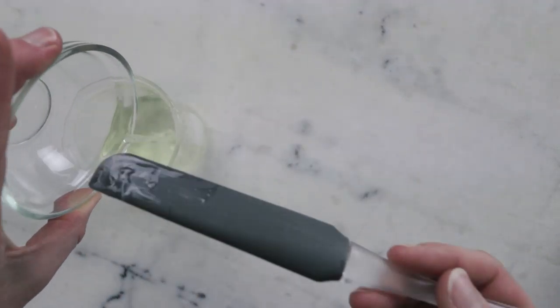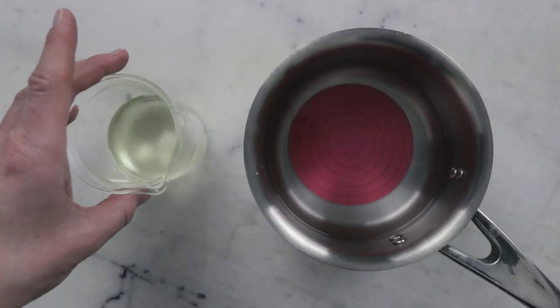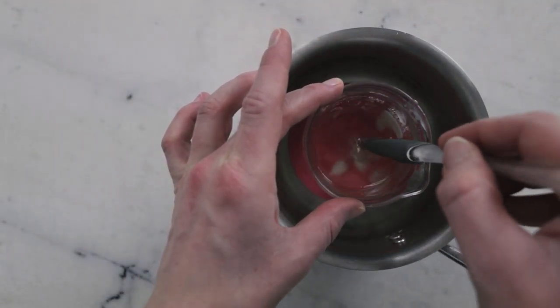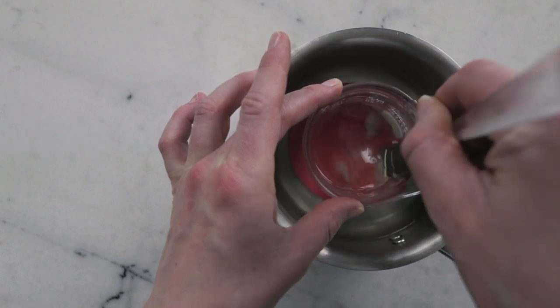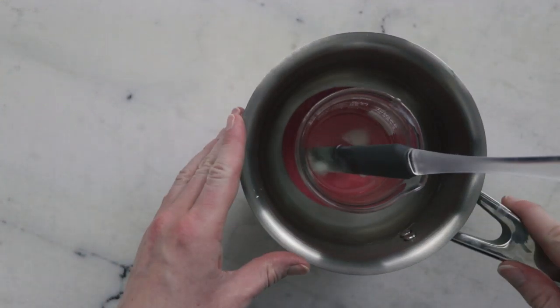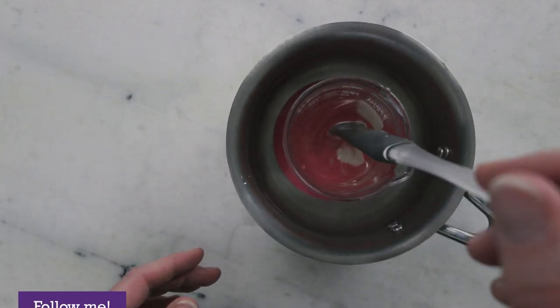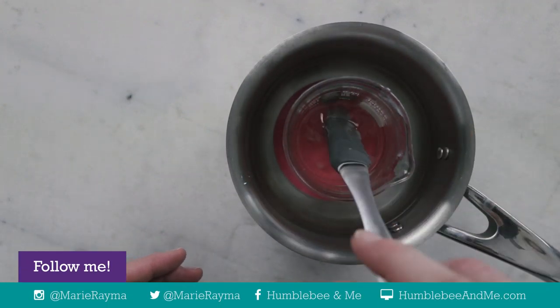Now we do need to heat this up to melt the hydrogenated castor oil. So I'm going to pop this in a water bath and then put it on the stovetop over medium heat for about 15 minutes, until those little blobs have melted into nothingness.